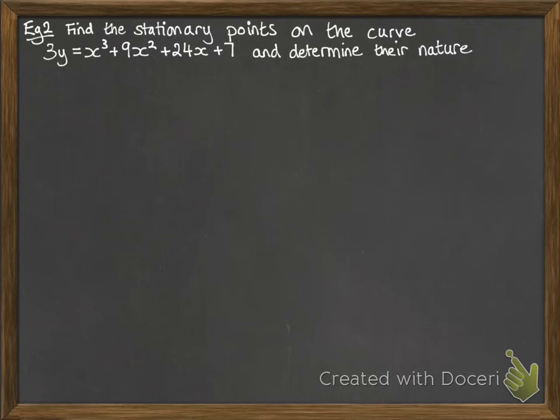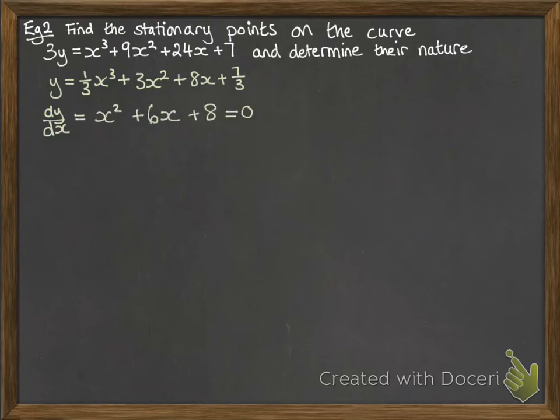So let's try that again. Find the stationary points on this curve and determine their nature. So we are just going to rearrange that to be y equals so that we can differentiate it properly. Differentiate y, you get dy/dx as the following. We want to set that equal to 0 to find the stationary points. And we can factorize that one. So we've got our stationary points at x equals -4 and -2, and then the corresponding y coordinates.